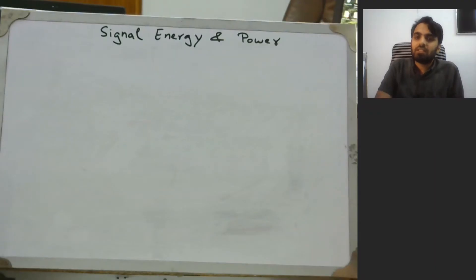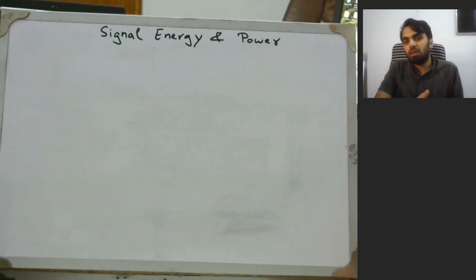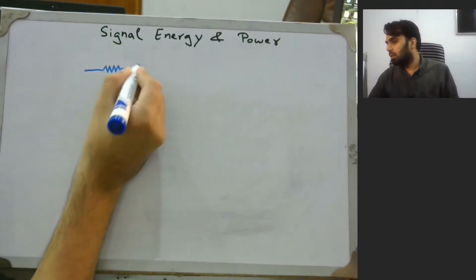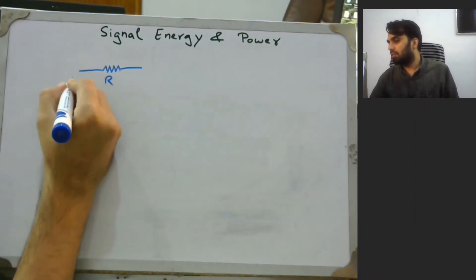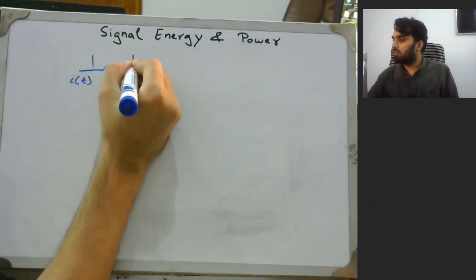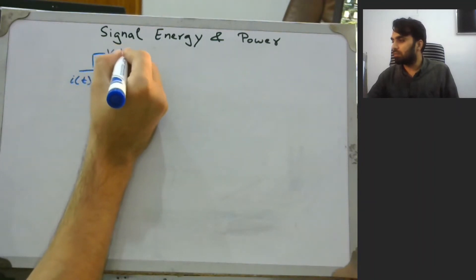In this video we look into what is signal energy and what is signal power, and we will deliberate on some examples on how we can find energy and power for a specific problem. To understand the concept of signal energy and signal power, let us look into a very basic and simple circuit element — the resistor. We have a resistor of R ohms with a current i(t) passing through it, and the potential difference across it is v(t).